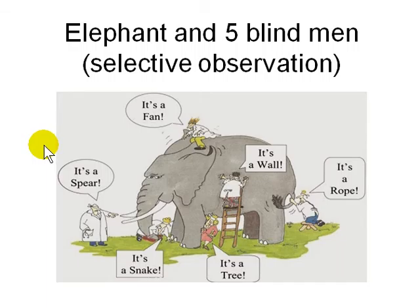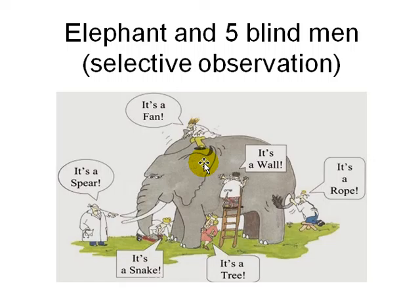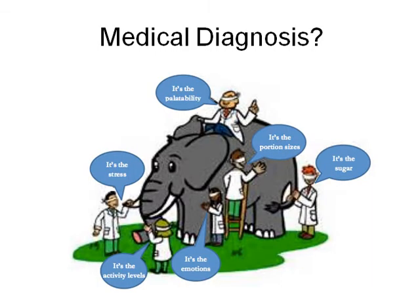An example of selective observation is the parable of the elephant and the five blind scientists. Each one touches a different part — one touches the tusk and says it's a spear, another touches the tail and says it's a rope, another touches the leg and says it's a tree. What you observe depends on where you are coming from. This is also true in medical diagnosis — the same illness can have multiple diagnoses depending on what the doctor focuses on.